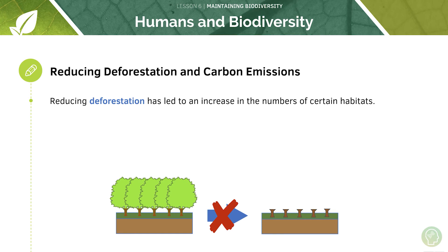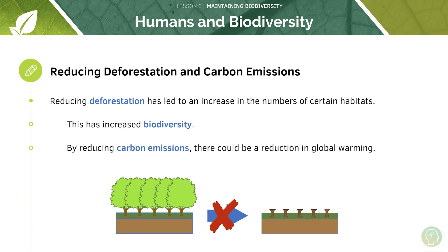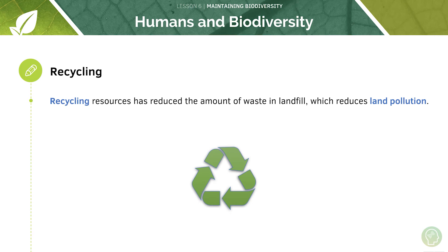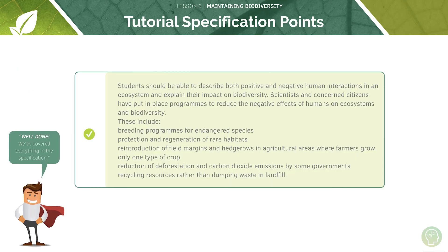Reducing deforestation has led to an increase in the numbers of certain habitats, which has also led to increased biodiversity. By reducing carbon emissions there could also be a reduction in global warming. Recycling resources has also reduced the amount of waste in landfill, which reduces land pollution. Make sure you know some examples of the positive human interactions in an ecosystem: breeding programs for endangered species, protection and regeneration of rare habitats, reintroduction of field margins and hedgerows by farmers, reduction of deforestation and carbon dioxide emissions, and recycling resources rather than dumping waste in landfill — those are your five key points.